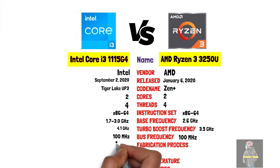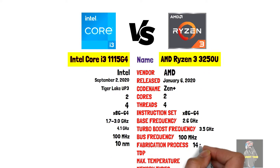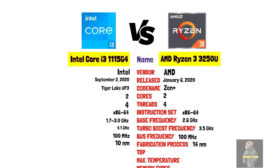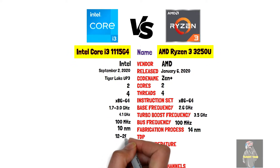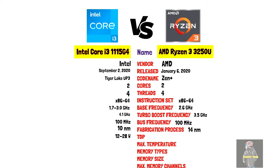Base clock: 1.7 GHz versus 2.6 GHz. Boost clock: 4.1 GHz versus 3.5 GHz. Clock stepping: 100 MHz for both. Process node: 10 nm versus 14 nm.